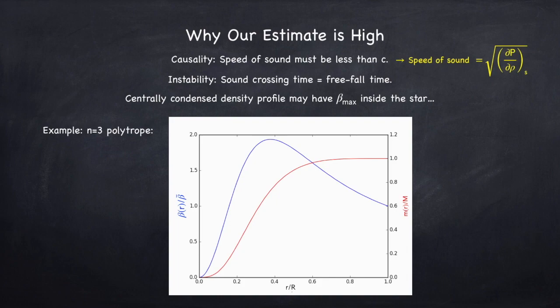So here's an example for an n equals three polytrope profile. So here I've plotted beta and the enclosed mass as a function of radius. On the horizontal axis, I've plotted the radial position divided by the radius of the star, so this will go from zero to one. On the left axis, I have beta divided by beta bar. So at the surface of the star, this will equal one. And on the right axis, I have the enclosed mass divided by the total mass, so this will go from zero to one as well.